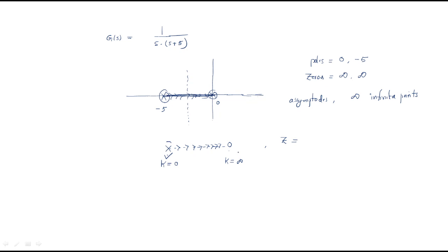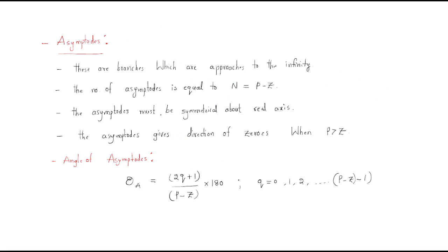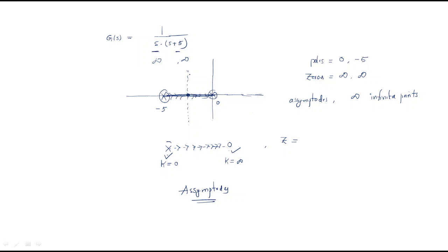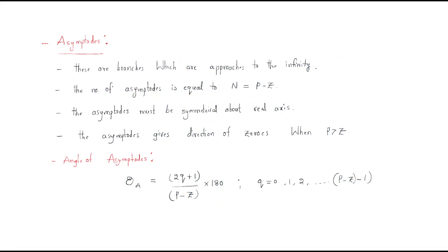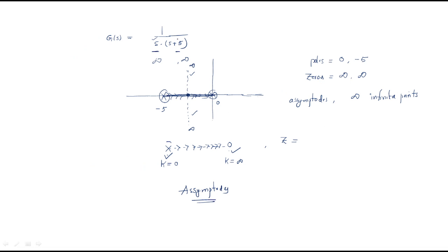Always keep in mind that a pole will reach a zero. Whenever only poles are available and there are no zeros, we take zeros as infinite. The direction of these infinite zeros is given by the asymptotes. Asymptotes give the direction of infinity; otherwise we cannot construct the root locus diagram. Asymptotes are the branches which approach infinity. The number of asymptotes equals poles minus zeros (P - Z).